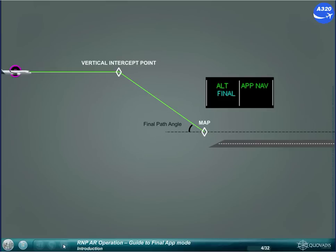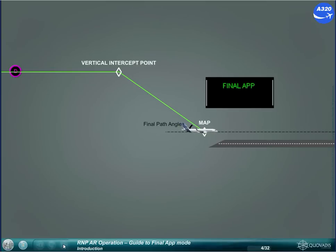Final Approach is a Managed Lateral and Vertical Guidance mode dedicated to the final descent segment of non-precision approaches. Final Approach guidance is available from the D-cell pseudo-waypoint down to the applicable minimum or missed approach point. This common mode is the combination of Approach Nav lateral guidance mode and Final vertical guidance mode.